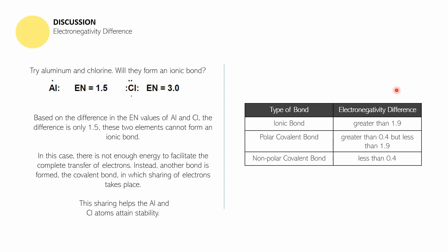Always remember the following: if the electronegativity difference is greater than 1.9, the bond is going to be an ionic bond and there will be a complete transfer of electrons. However, if the electronegativity difference is greater than 0.4 but less than 1.9, there will be a polar covalent bond. And if the electronegativity difference is less than 0.4, it will be considered a non-polar covalent bond.